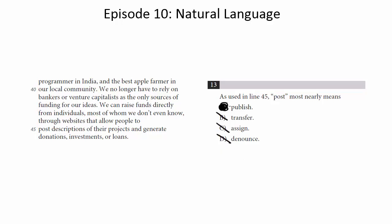So we can get rid of B, C, and D. And the most obvious answer choice here is A, because that's what you're doing. You're posting things online, you're publishing them online. So this one is A.